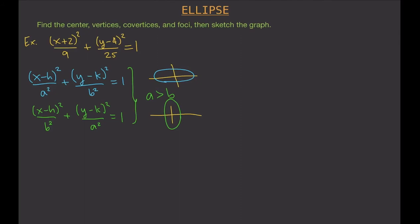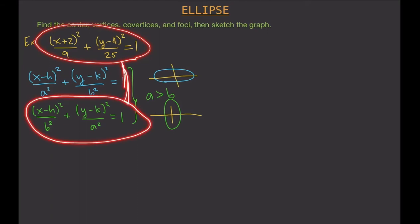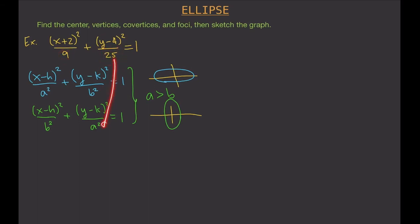Based on our original equation, we find that it follows the second form — with a² under y. The bigger value is 25, and since a is greater than b, 25 is a² and 9 is b². So our ellipse is a vertically oriented ellipse.